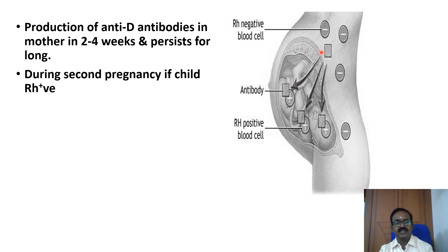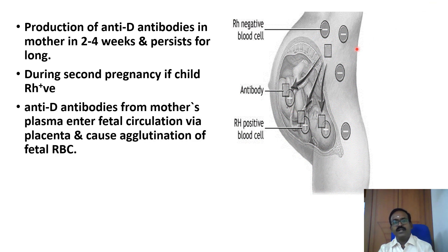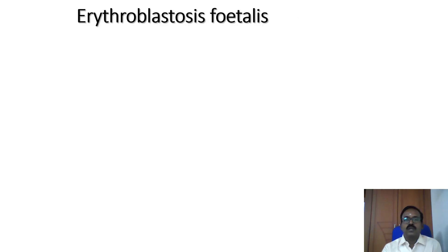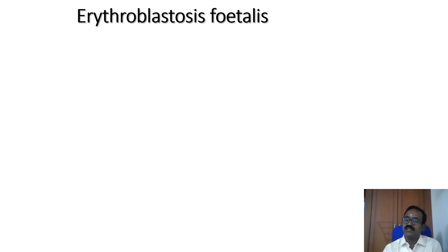During the second pregnancy, if the child is Rh positive, the anti-D antibody from the mother's plasma enters the fetal circulation via the placenta, causing agglutination of fetal RBCs. Erythroblastosis fetalis occurs in the second pregnancy, with the chance of occurring being 3 to 10%, and it may increase in subsequent pregnancies.